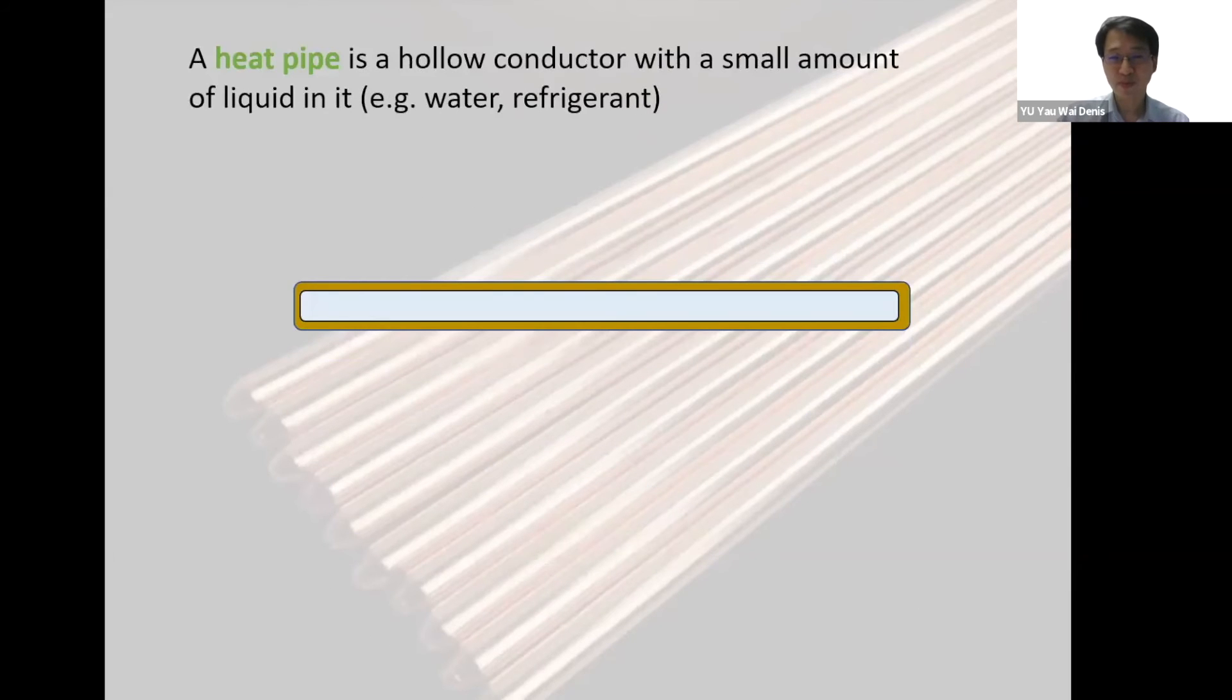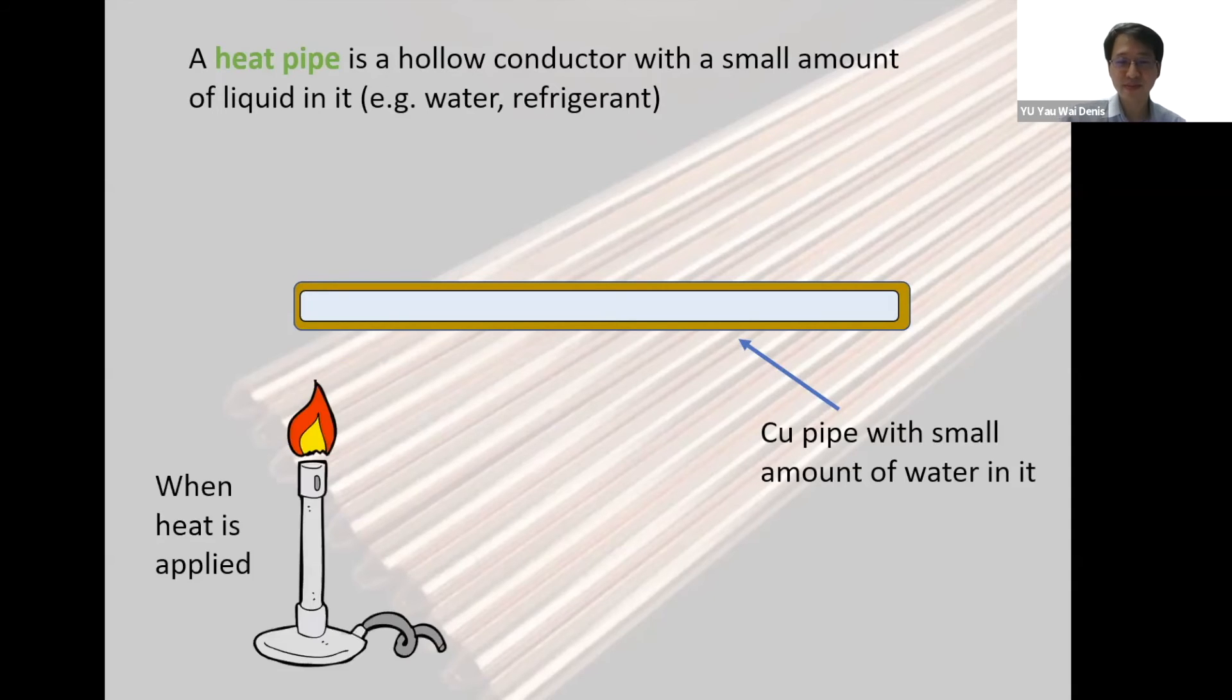What about a heat pipe? The secret in here is that it is a conductor, but there is something inside, typically a liquid inside. In our case we have copper pipe with a small amount of water inside. So what makes a difference now?